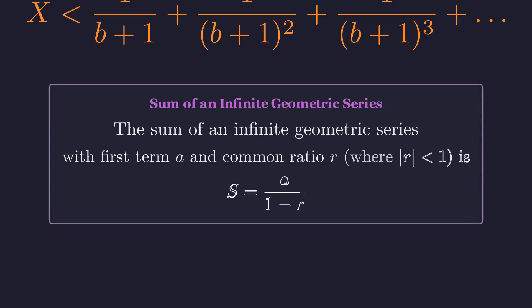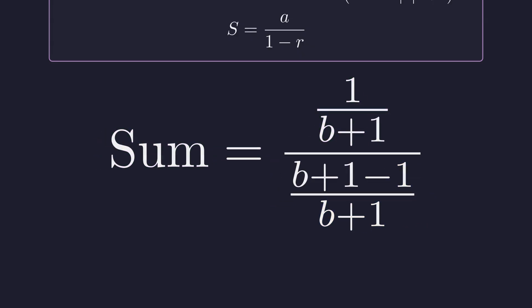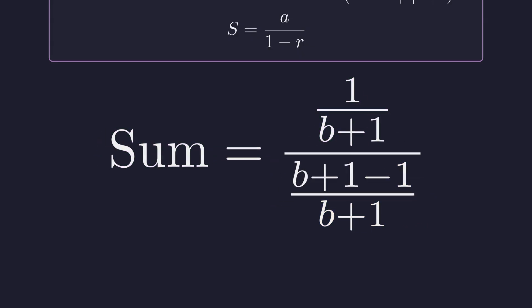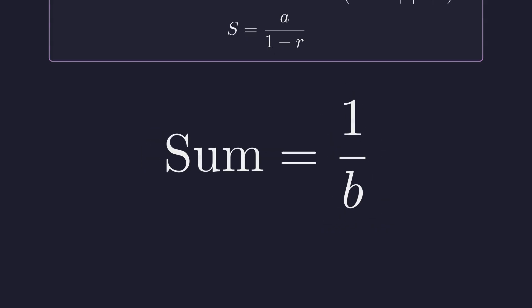The sum of an infinite geometric series can be calculated with the formula A divided by the quantity 1 minus R, where A is the first term and R is the common ratio, provided the absolute value of R is less than 1. In our case, the first term A is 1 over B plus 1, and the common ratio R is also 1 over B plus 1. Let's simplify this expression. We can rewrite 1 as B plus 1 over B plus 1 to get a common denominator. This gives us B plus 1 minus 1 all over B plus 1 in the denominator, which simplifies to B over the quantity B plus 1. Now, the B plus 1 terms in the numerator and denominator cancel out. The sum of the geometric series is exactly 1 over B.